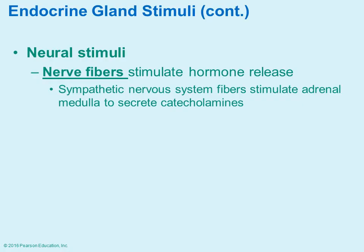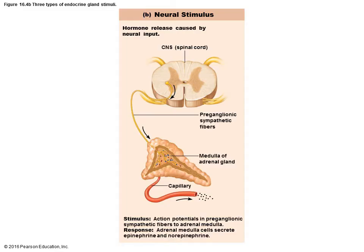Neural stimuli occur when nerve fibers stimulate the release of a hormone. It is often the sympathetic nervous system — such as with the adrenal gland — that stimulates it to release epinephrine and norepinephrine stored in the adrenal gland.